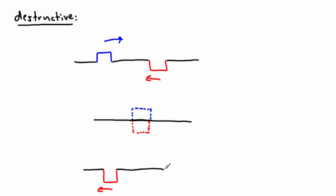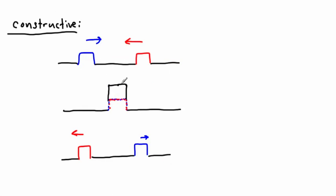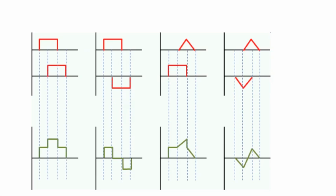They've basically gone through each other, and the interesting thing is what happened when they actually met — when they were on top of each other. Like I said, these are the extreme examples of destructive and constructive interference — the nicest examples you'll ever get. In reality, you get all sorts of crazy things.